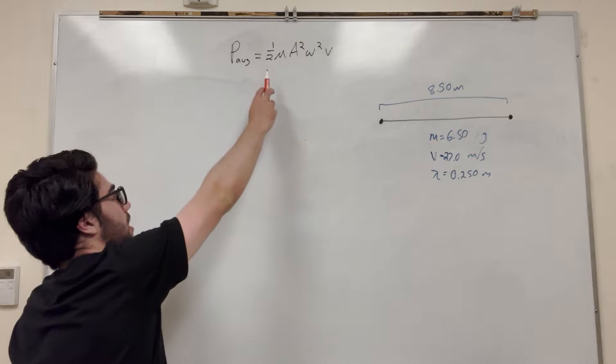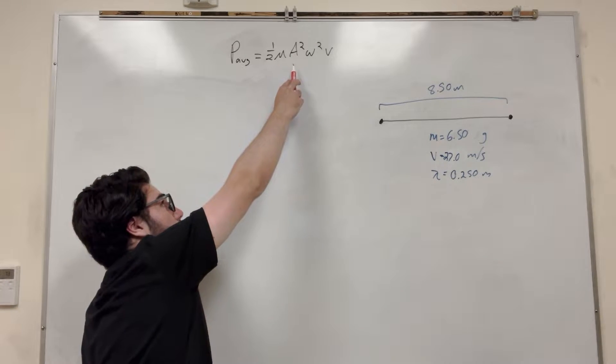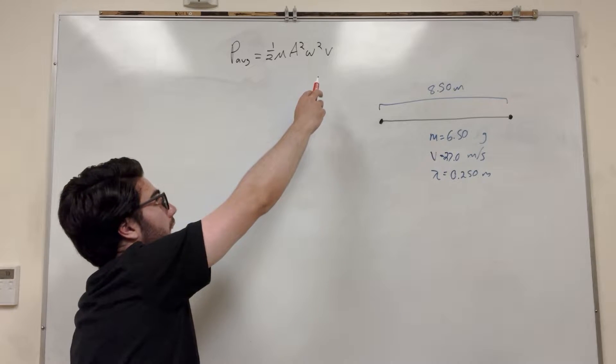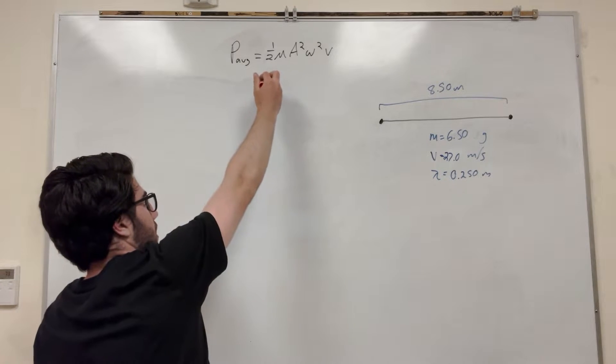We're given the power average of one half. We don't know the mass per unit length yet, that's something we can calculate though. We're trying to find amplitude. Angular velocity, we can figure that out. And velocity, we're given that. So let's go ahead and solve for what we don't know. First, mass per unit length.